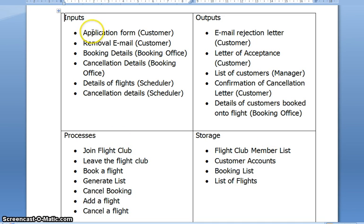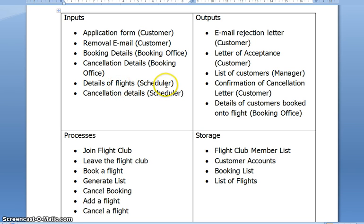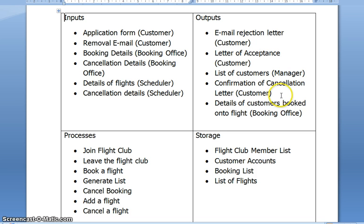We identified the inputs: the application form from a customer, removal email from a customer, booking details from the booking office, cancellation details from the booking office, details of flights from a scheduler, and cancellation details from the scheduler. The outputs are the email rejection letter, the letter of acceptance, the list of customers, confirmation of cancellation letter, and the details of customers booked onto a flight.